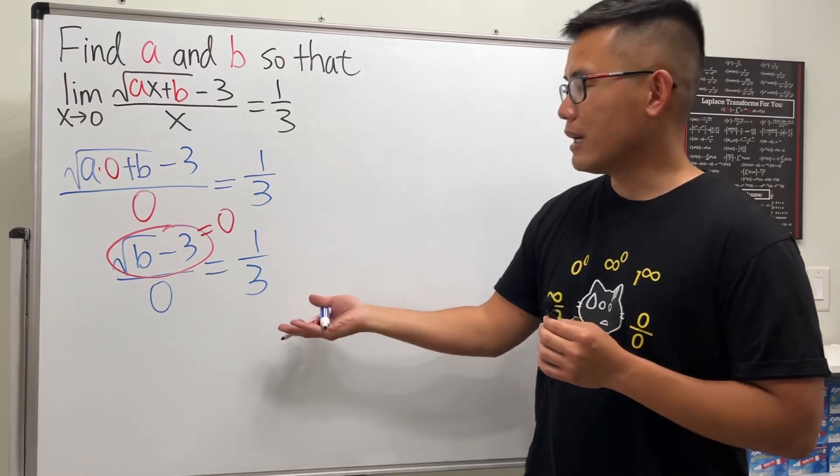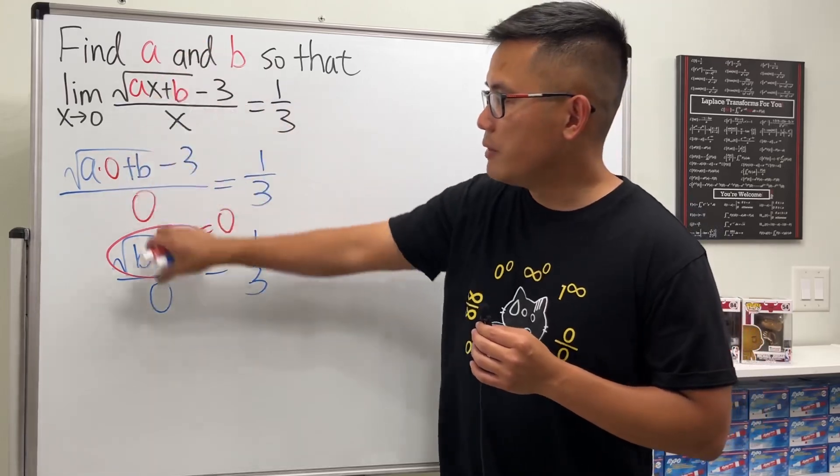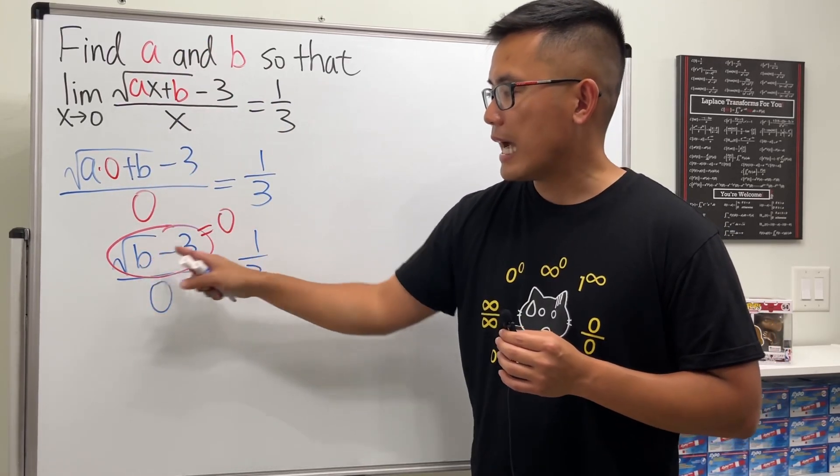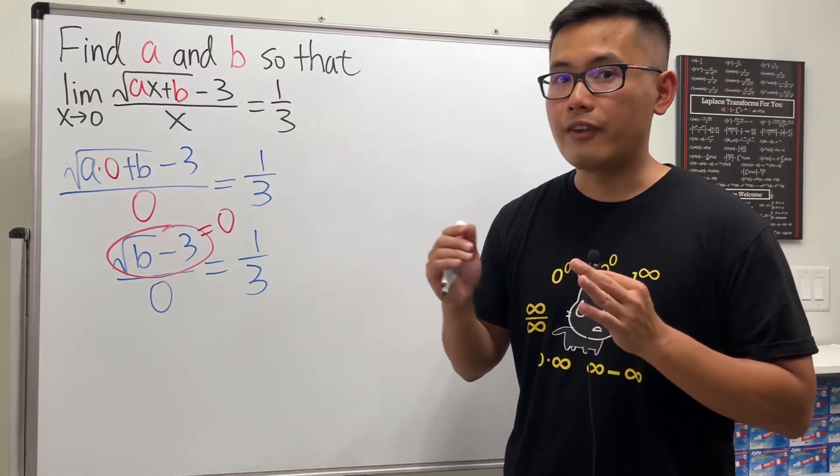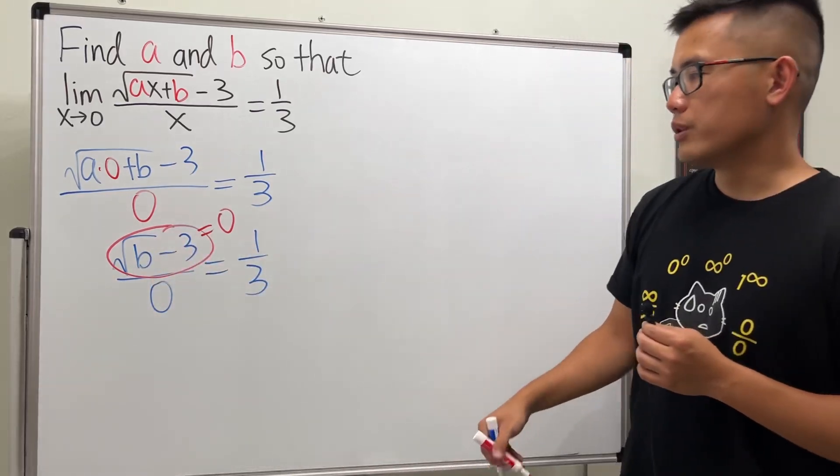...then we have a zero over zero indeterminate form, then it could possibly equal to one third. So right here, we're not doing regular computation—this is the limit form. The idea is that we really want the top to be zero. That's how we can have a hope that this limit could be one third.